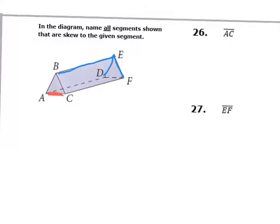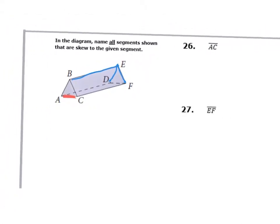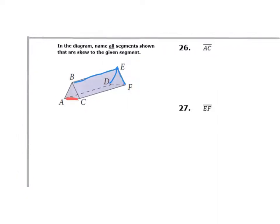What's remaining is skew to the given segment. Everything remaining is skew to segment AC. So the skew segments are BE, DE, and EF.